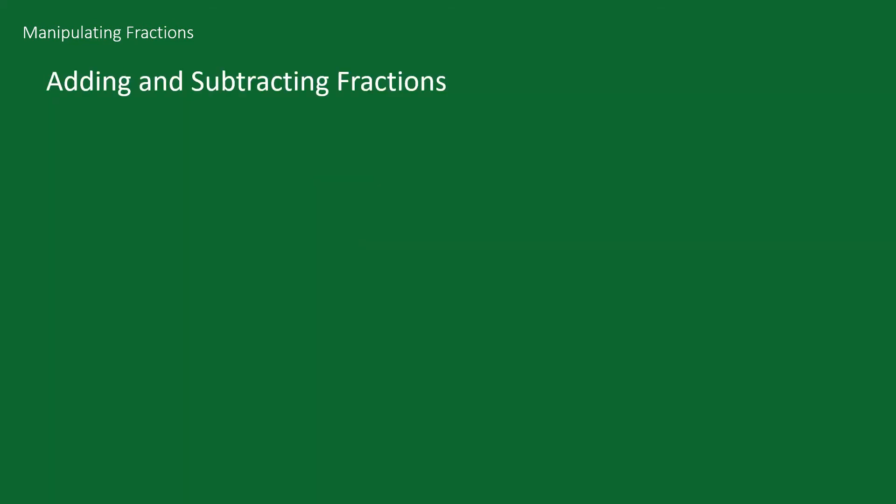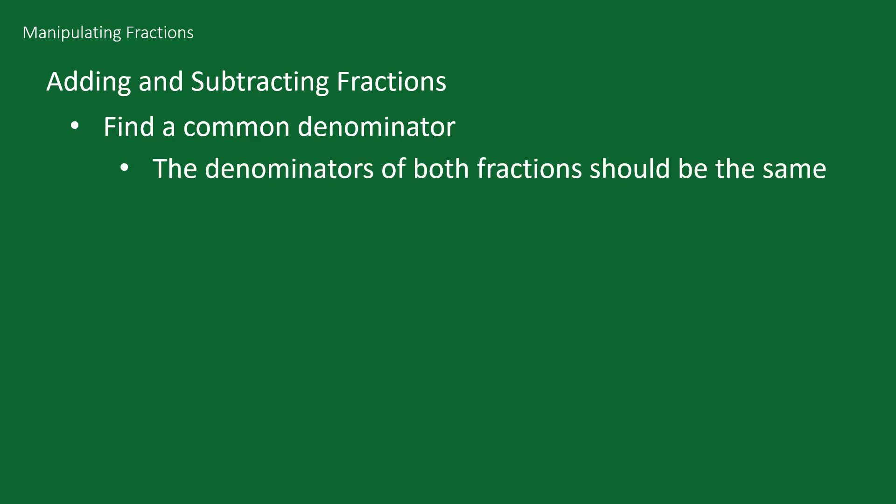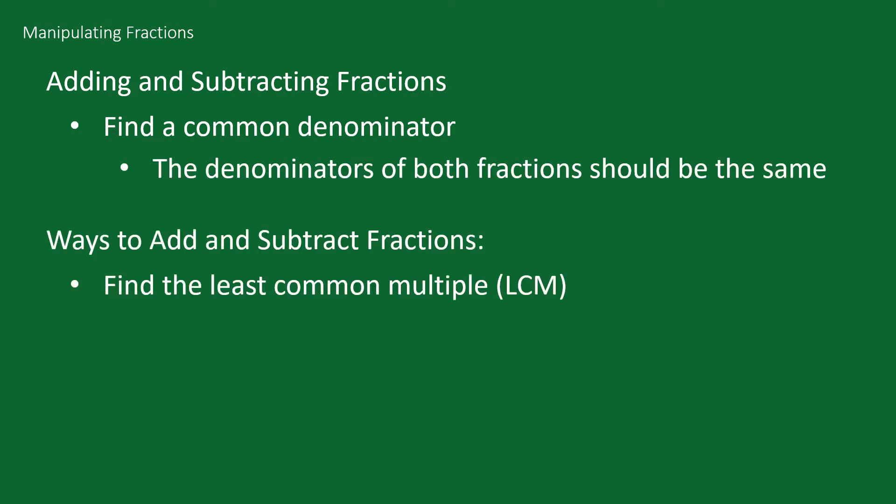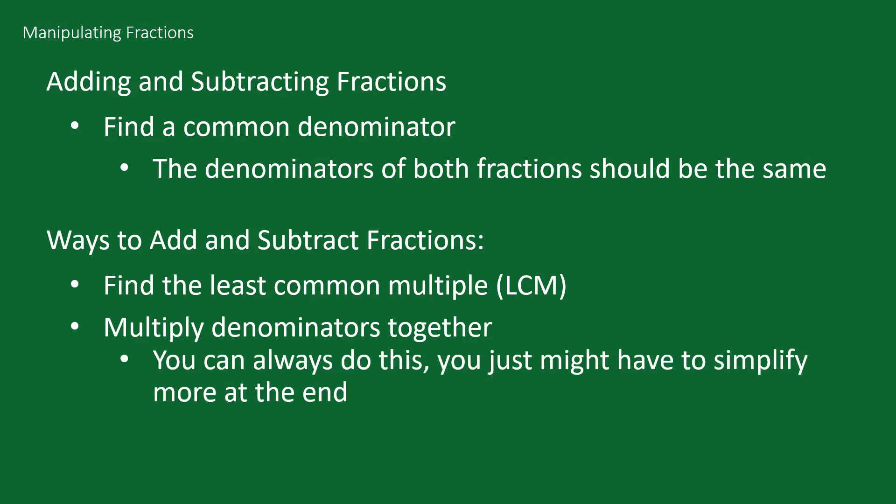For both adding and subtracting fractions we need to find a common denominator. By finding a common denominator I mean that we want to end up with both fractions having the same denominator. We can do this by either finding the least common multiple, LCM, or multiplying the denominators together. Multiplying the denominators together and using that as your common denominator will always work. You just might have to do more reducing to get simplest form.